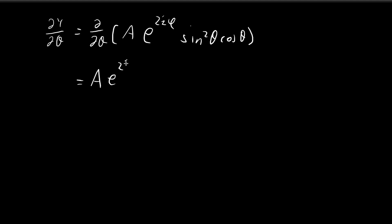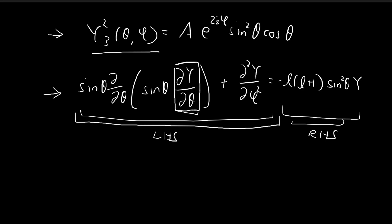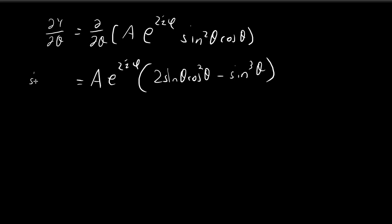We're going to use the product rule. We differentiate sine squared theta to get 2 sine theta, then multiply by cosine theta to get cosine squared theta. Then we retain the sine squared term and differentiate cosine theta, which becomes negative sine, giving us negative sine cubed theta. Now we need to multiply the whole derivative by sine theta, raising each sine power by one — so sine squared becomes sine cubed, and negative sine cubed becomes negative sine to the fourth.